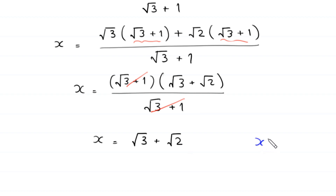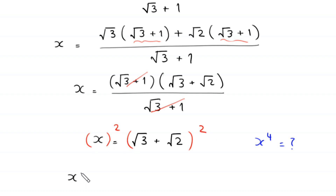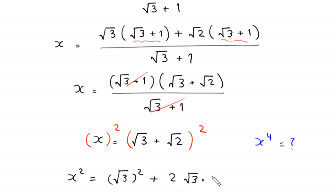We are left with x equal to root 3 plus root 2. Since we need to find x to the power 4, we square both sides of this equation. So x squared equals (root 3 plus root 2) squared, which becomes root 3 squared plus 2 times root 3 times root 2 plus root 2 squared, giving x squared equal to 5 plus 2 root 6.